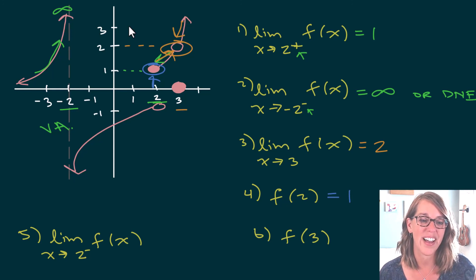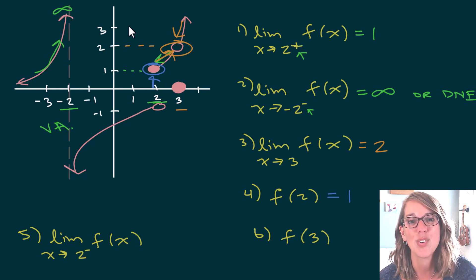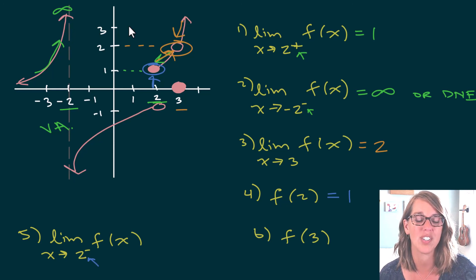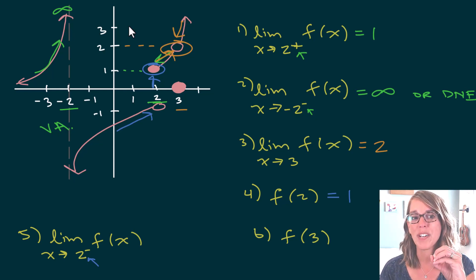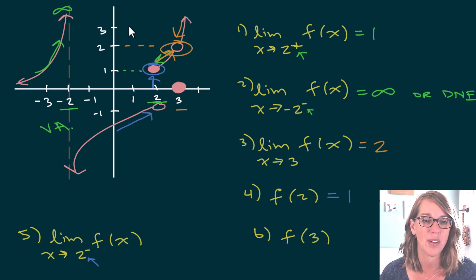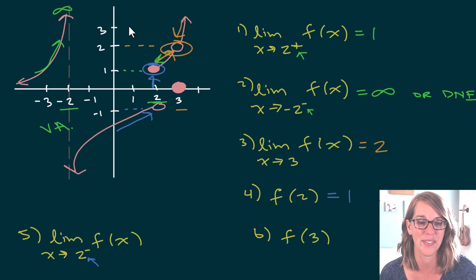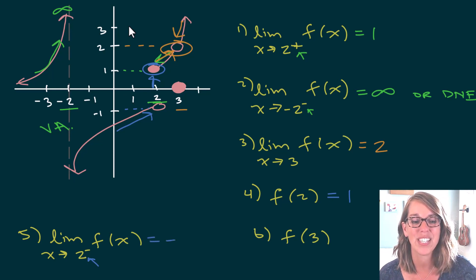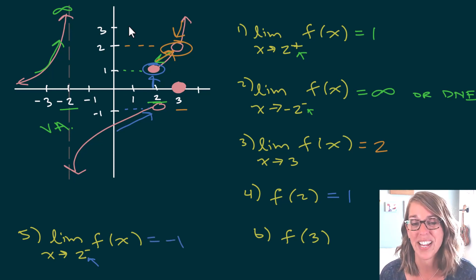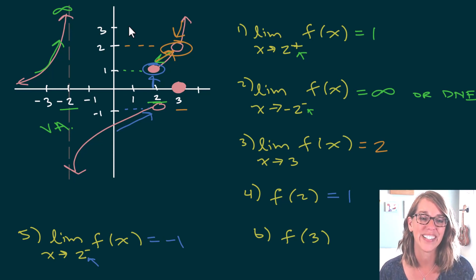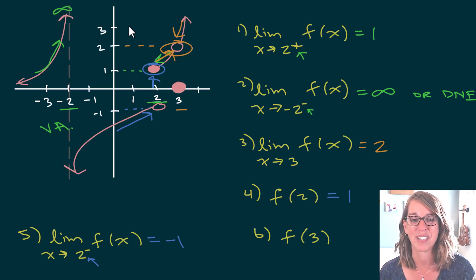Next, question five: the limit as x approaches 2 from the left. Approaching 2 from the left puts me on this piece of my graph, approaching the open circle. The open circle lines up with negative 1. If you said something like negative three-quarters or negative 0.8, that's fine as well — somewhere in that realm is great.